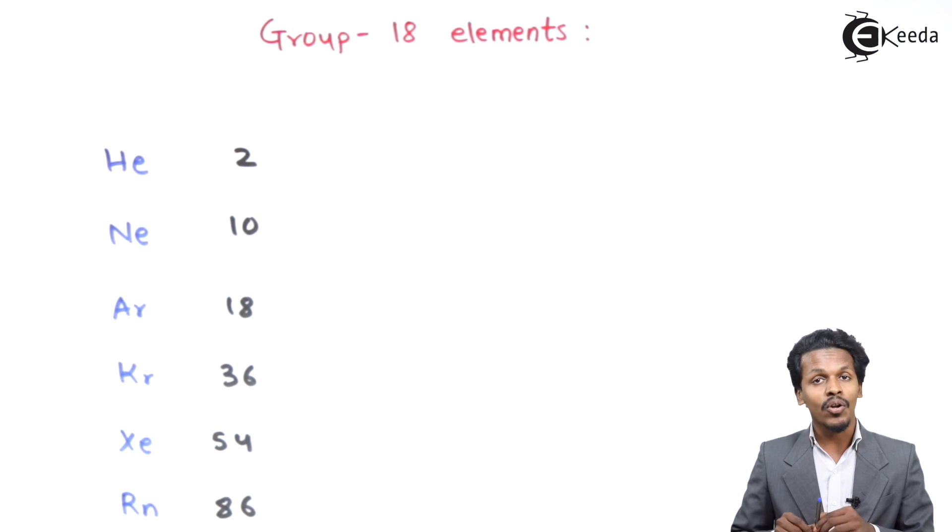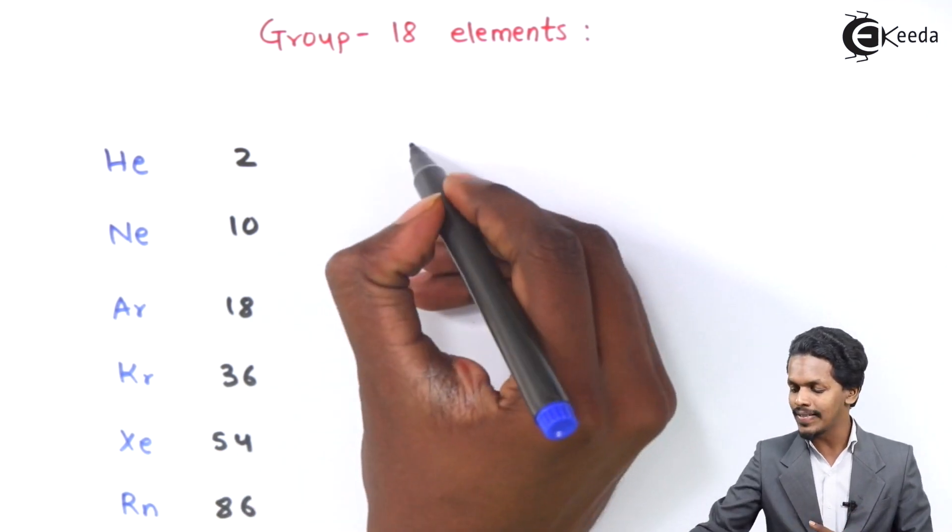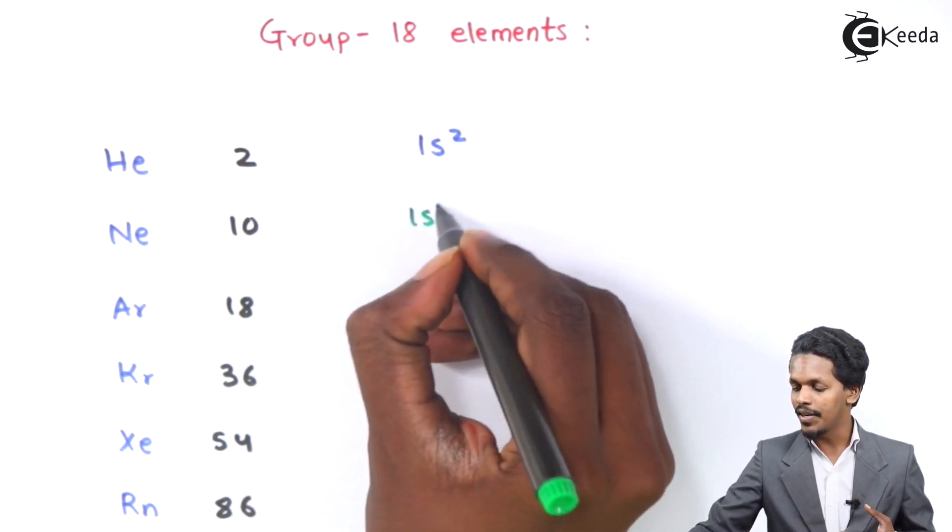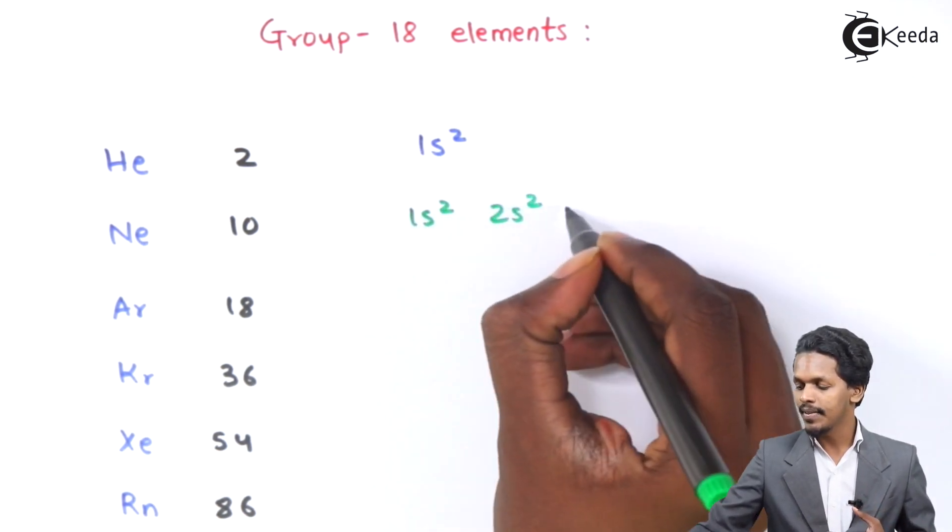So if we talk about the electronic configuration of Helium, we will get to know that it is nothing but 1s2. And if we are talking about Neon, it has been found to be 1s2, 2s2, 2p6.